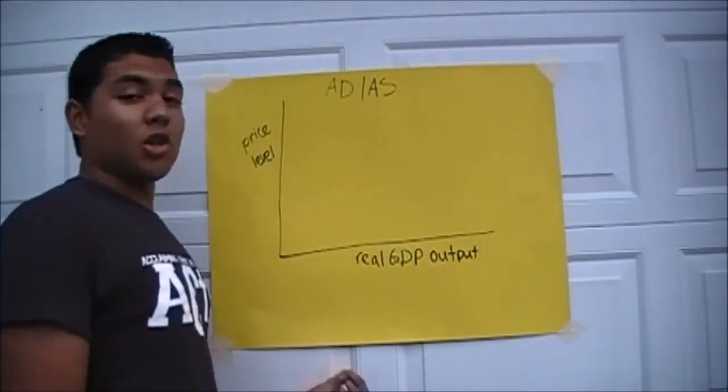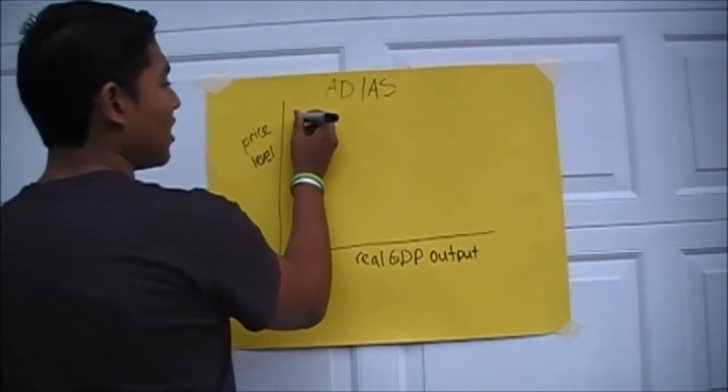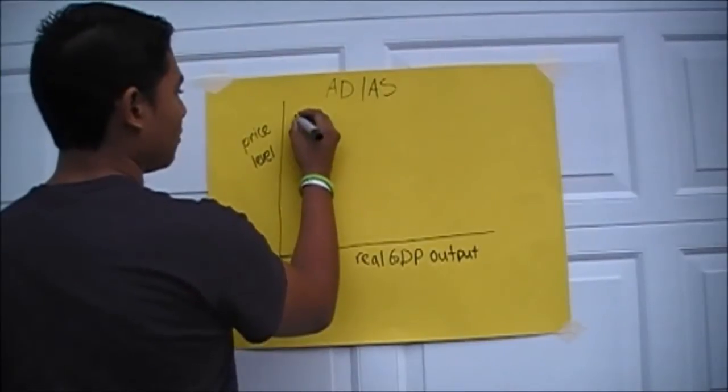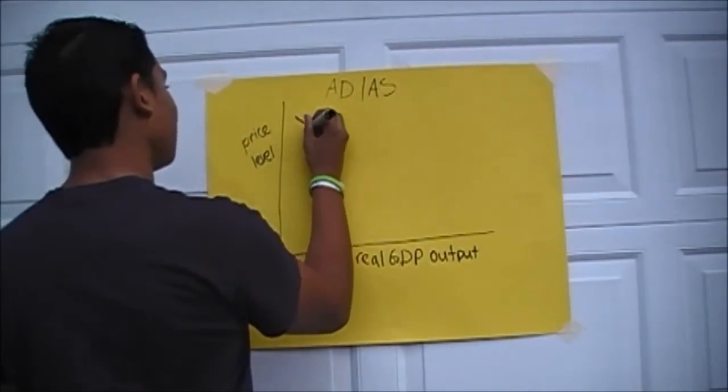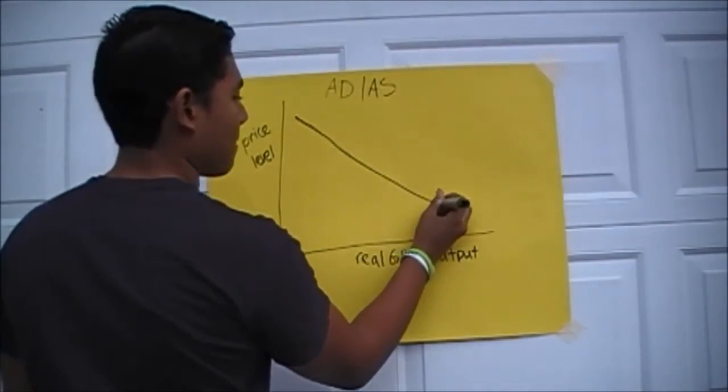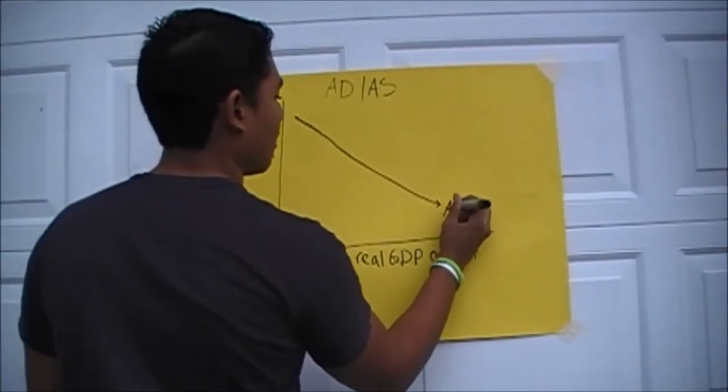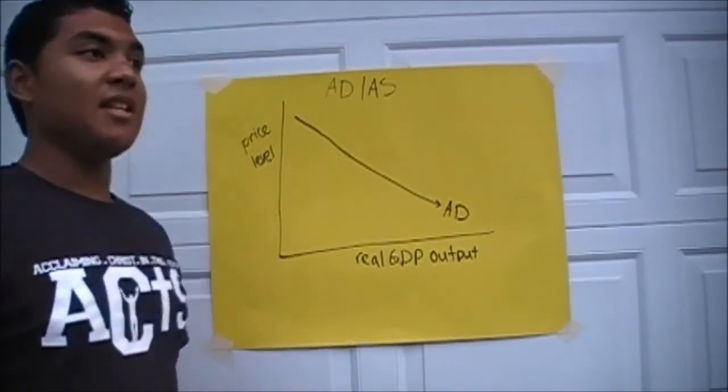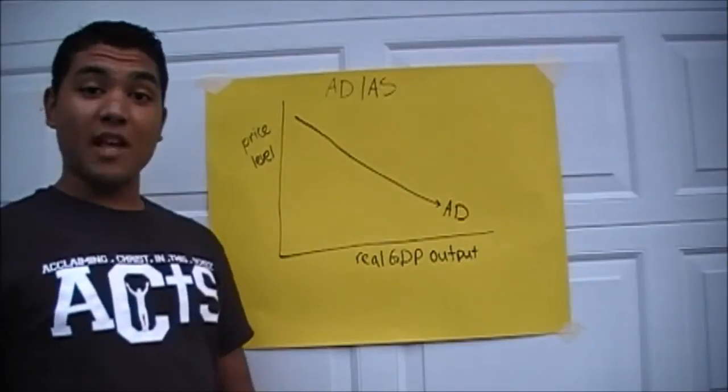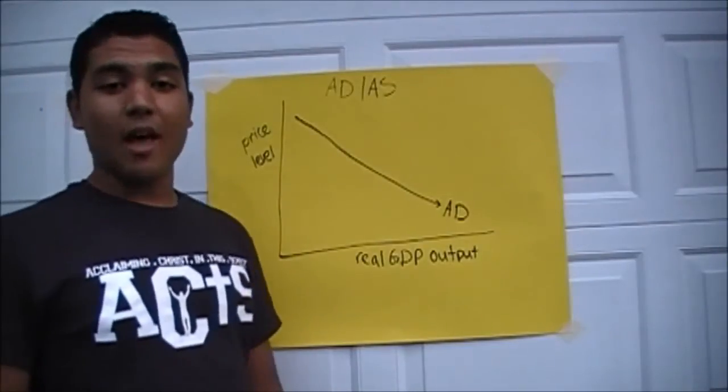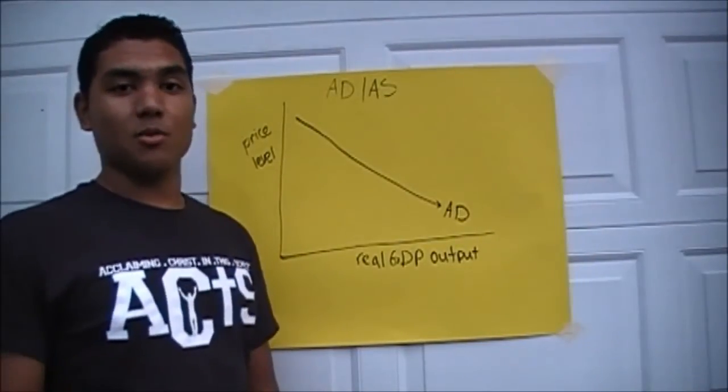Alright, so we all know AD. AD is always downward sloping. What AD means is that when price level is up, when inflation is up, it means consumption is down. When inflation is down, consumption is up.